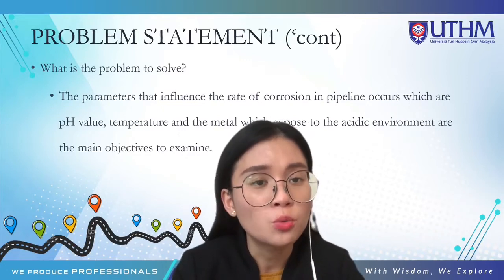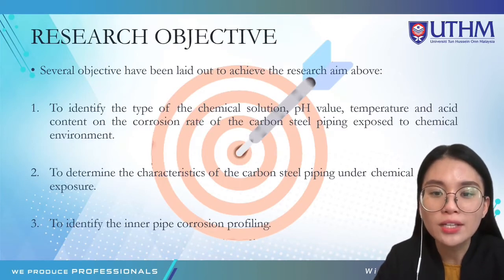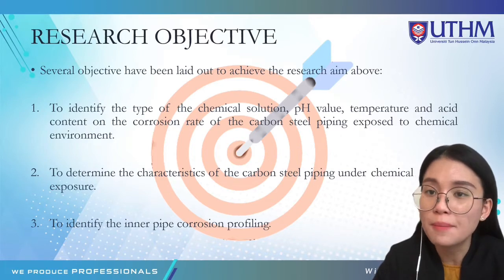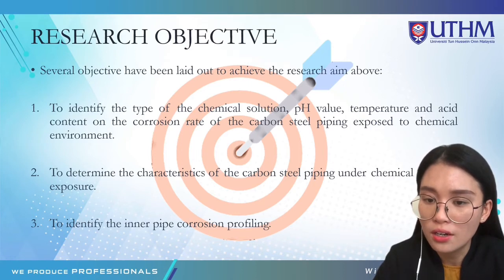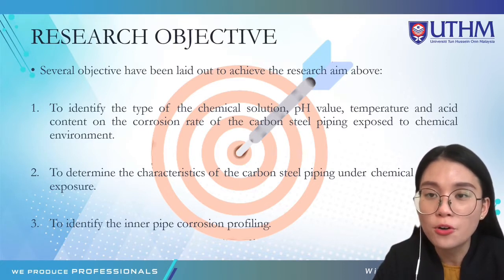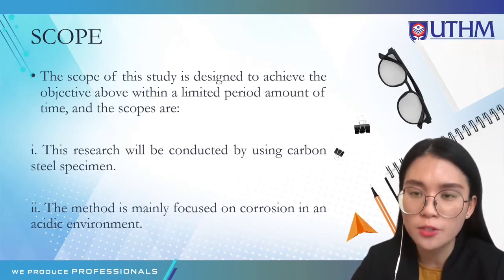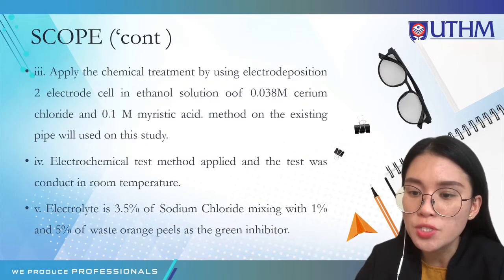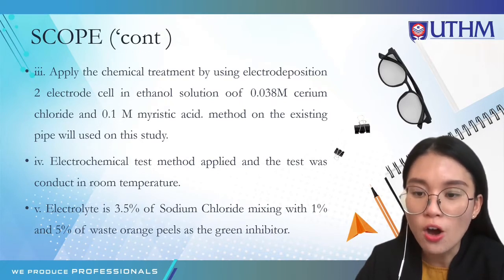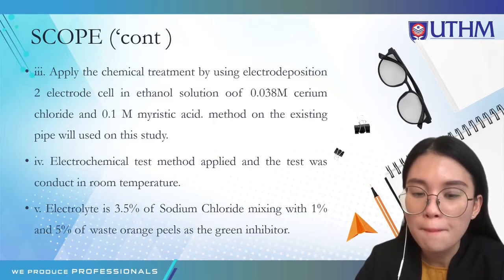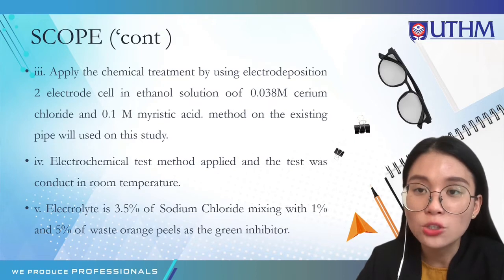For my research objectives, firstly, I would like to identify the type of chemical solution — pH value, temperature, and acid content — on the corrosion rate of carbon steel piping exposed to the chemical environment. Secondly, to determine the characteristics of carbon steel piping under chemical exposure. Thirdly, to identify the inner pipe corrosion profiling. The scope of this research will be conducted using carbon steel specimens only.